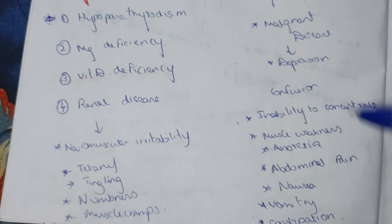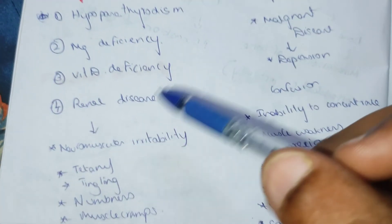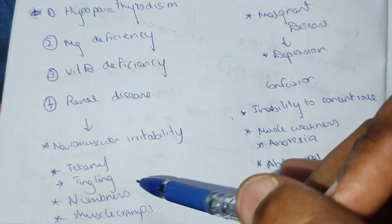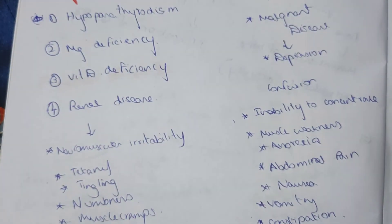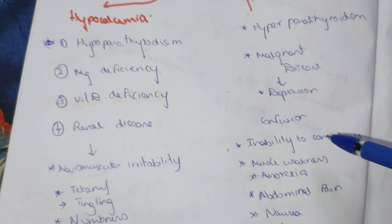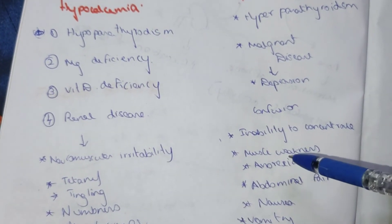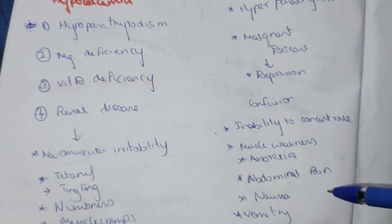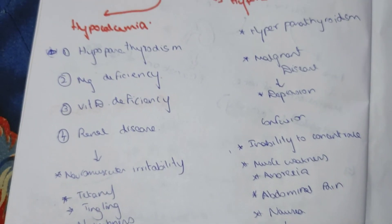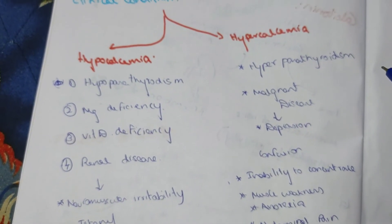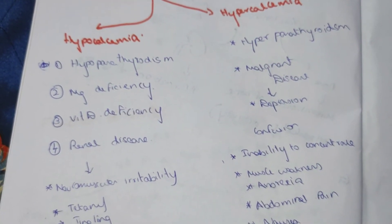Symptoms of calcium deficiency (hypocalcemia) include neuromuscular irritability, tetany, tingling, numbness, and muscle cramps. Elevated calcium (hypercalcemia) results in depression, confusion, inability to concentrate, muscle weakness, anorexia, abdominal pain, nausea, vomiting, and constipation.